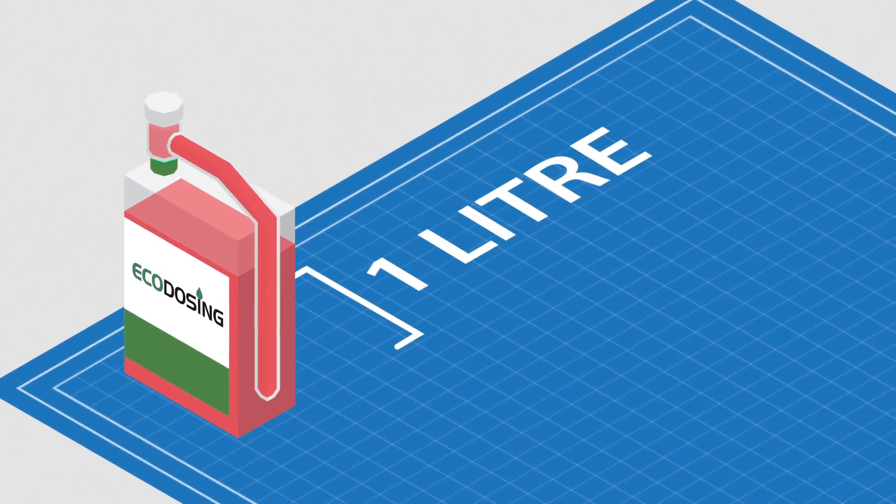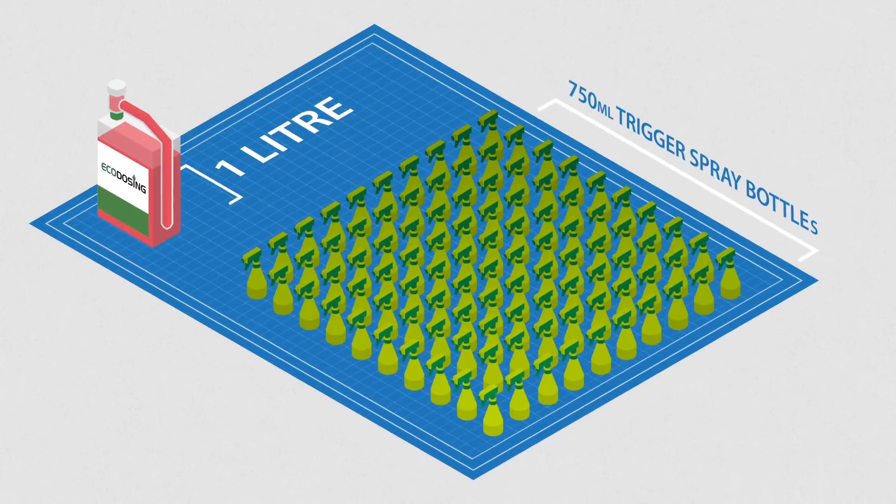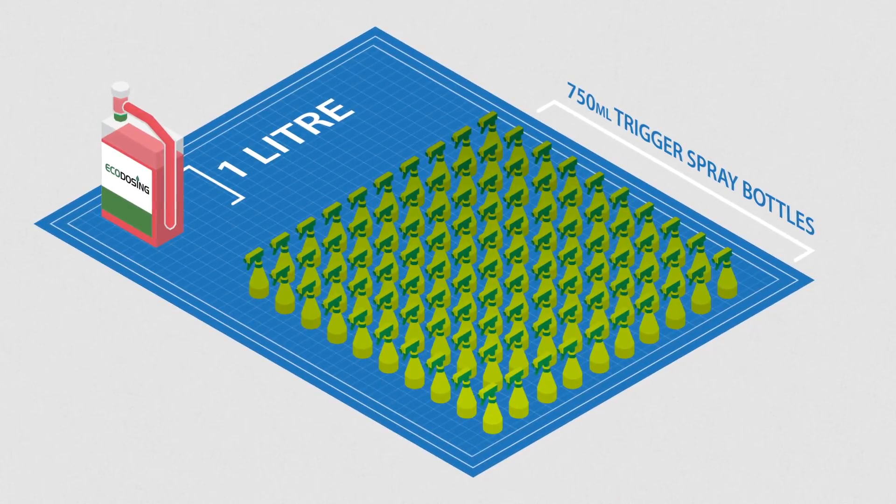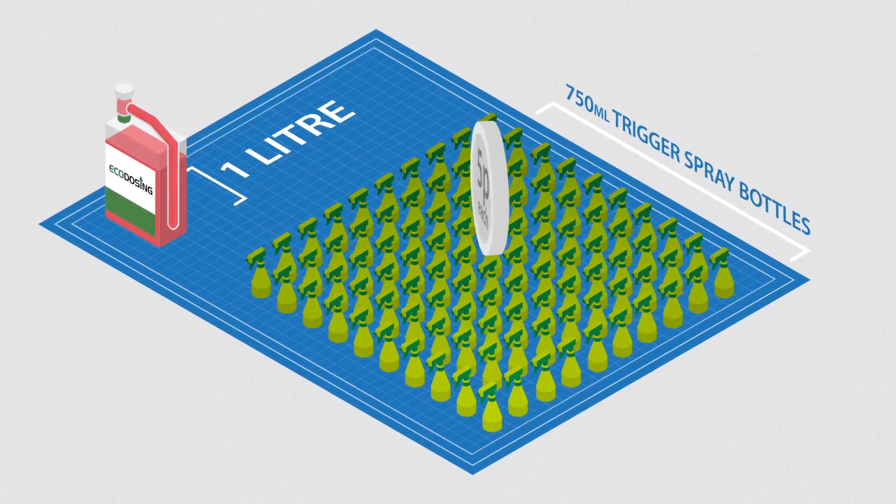A one litre bottle of eco-dosing will create 100, 750 ml trigger spray bottles of product from as little as 5 pence per dose.